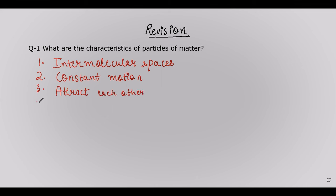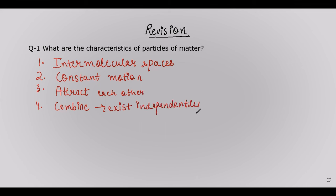The fourth characteristic is that all matter particles are dependent on each other — they have to combine with another particle so that they can exist independently. So these are the four characteristics of particles of matter: intermolecular spaces must be present, particles are in constant motion, they can attract each other, and they must combine to exist independently.